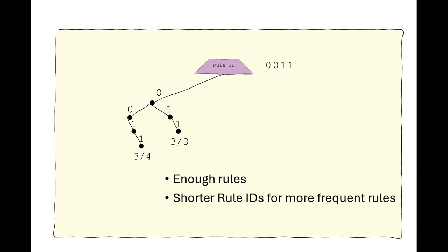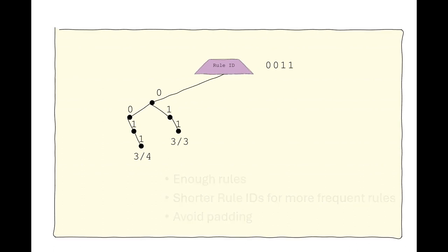Rules that are more frequently used should be assigned shorter lengths. The length should be chosen in a way that avoids unnecessary padding at the end of the SCHC packet.